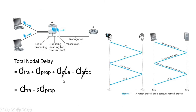Queuing delay and processing delay are very small compared to transmission and propagation delay, so they are considered negligible. Just as when travelling from Ahmedabad to Mumbai we don't calculate the waiting time at toll booths or traffic signals — we just calculate journey time — similarly, in data communications we consider transmission delay and propagation delay when calculating total nodal delay, and we do not calculate queuing and processing delay.